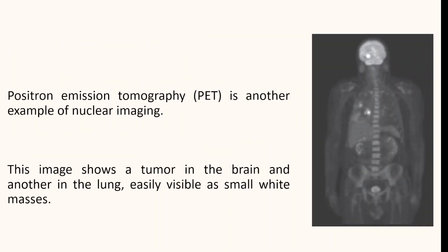Another modality of nuclear imaging is positron emission tomography. In this method, the patient is given a radioactive isotope that emits positrons as it decays. In the image shown here, we can clearly see a tumor in the brain and another in the lung, visible as small white masses.